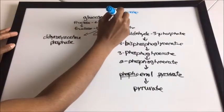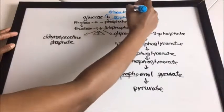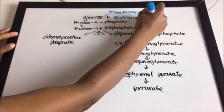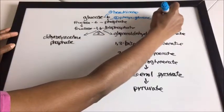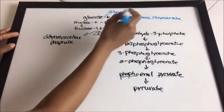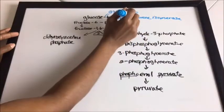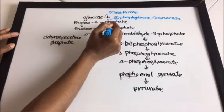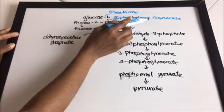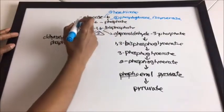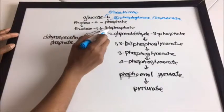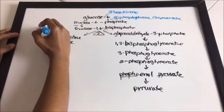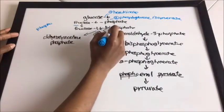Between glucose-6-phosphate and fructose-6-phosphate we have our second enzyme, and it's phosphoglucose isomerase. All you have to do is remember 'isomerase' because we already have 'phospho' and 'glucose' in the name.